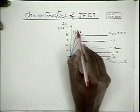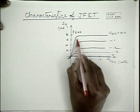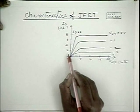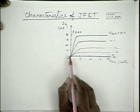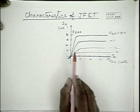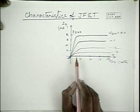In the last class, we were discussing about the JFET characteristics. We have seen the construction and we have seen how the output characteristics look like. Please look at this diagram. Please recall that the output characteristics is like this. It has an ohmic region in which the device acts like, between the drain and the source, the device acts like a voltage dependent resistance.